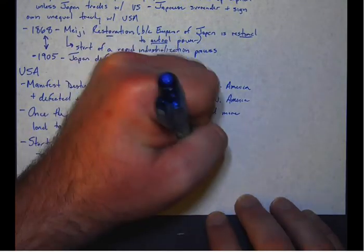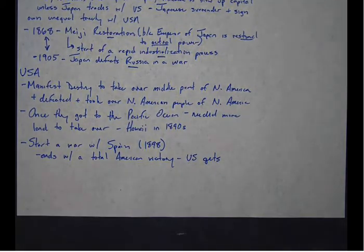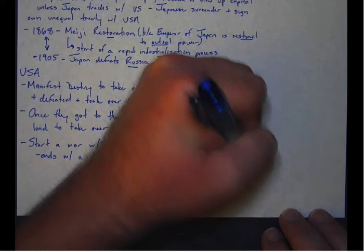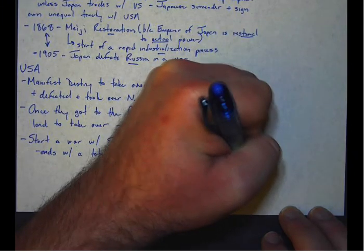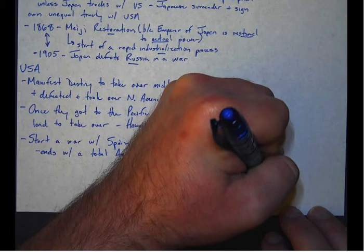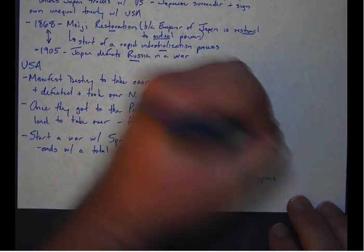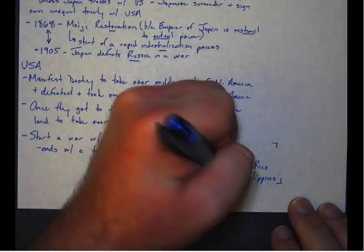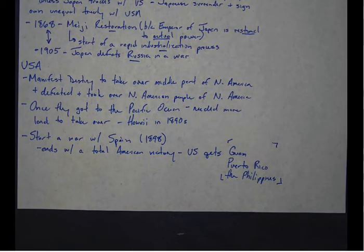You get a total American victory. And the United States gets a bunch of old Spanish territory. The United States gets the island of Guam, the island of Puerto Rico, and they also get the islands of the Philippines. So all of this stuff now gets to be part of a growing American empire.